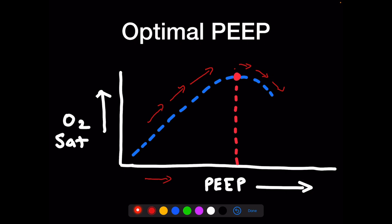If ARDS is improving, the optimal PEEP might decrease. If ARDS is worsening, it might need to go higher. We don't know in advance — we have to change the PEEP and observe.